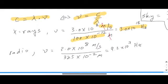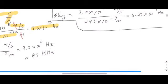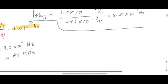If you do it for the other two, radio will give you a frequency of 9.2 times 10 to the 7 hertz, which, if you convert that, ends up being 92 megahertz, which is a frequency on your radio station. Usually it starts from about 88 and goes all the way to 108 or 109 or so. The sky in this case has a much higher frequency at 6.34 times 10 to the 14 hertz.